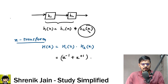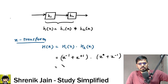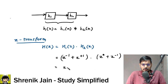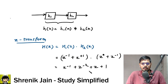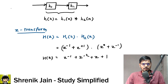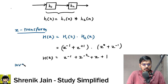h2(n) = δ(n) + δ(n−1), so H2(z) = z^0 + z^(−1) = 1 + z^(−1). After multiplying H1(z) · H2(z): z^(−1)·1 = z^(−1), z^(−1)·z^(−1) = z^(−2), z^(+1)·1 = z, and z^(+1)·z^(−1) = 1. Now we apply the inverse Z-transform to get h(n).